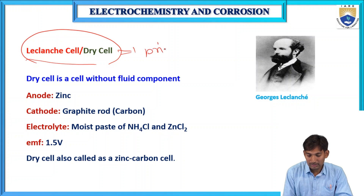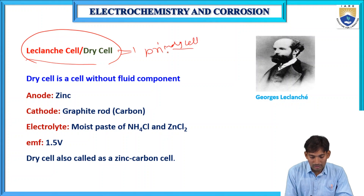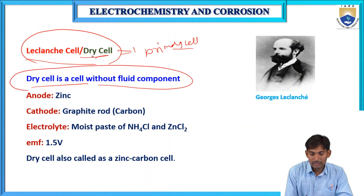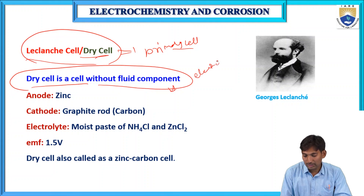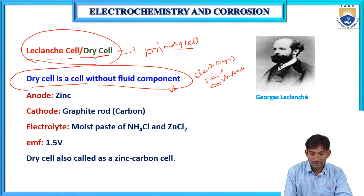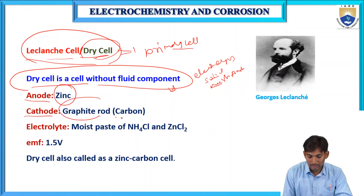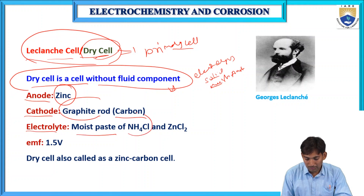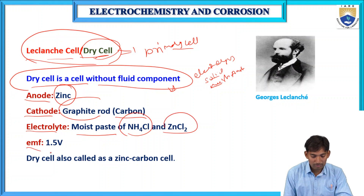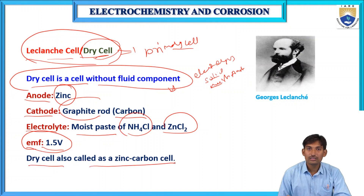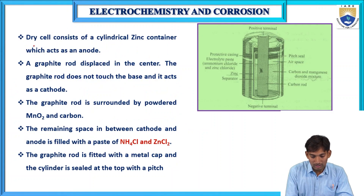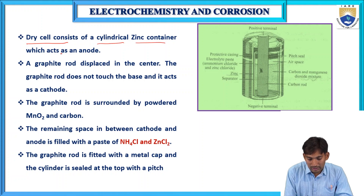This is an example of a primary cell — the dry cell, also called a Leclanché cell or zinc-carbon cell. In this cell, there is no fluid component; the electrolyte is a moist paste of ammonium chloride and zinc chloride. The anode is zinc and the cathode is a graphite rod or carbon rod. The cell EMF is 1.5 volts.